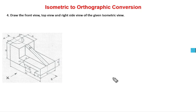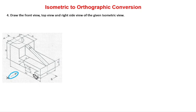Next, problem number 4: draw the front view, top view, and right side view of the given isometric view. If you observe, the arrow mark is from this direction, which indicates that the front view is related to length and height. Length and height related lines, and breadth related lines.